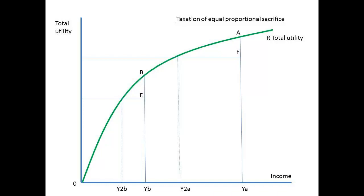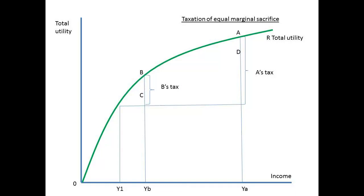Equal proportional sacrifice requires that the tax should have an equal impact on the total utilities of all taxpayers. Again, we have our society of two individuals, A and B. The proportional impact on total utility would require that AF divided by AYA be the same as BE divided by BYB. The slope of total utility represents the marginal utility of income. To equalise marginal utility, a progressive tax is used such that the post-tax income of each will be Y1. In this model we see that A is now paying a much larger amount of tax than in either of the previous models.